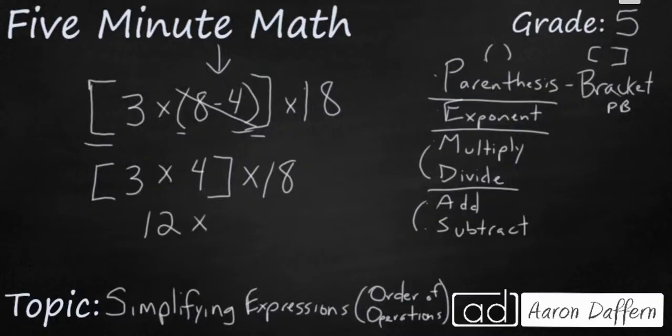So what I'm left with is 12 times 18. I don't have any exponents and I'm left with one simple multiplication problem. So we're going to go ahead and line this up like a regular 2 by 2 multiplication. And that is going to give us 216. So simplifying this expression, it equals 216.